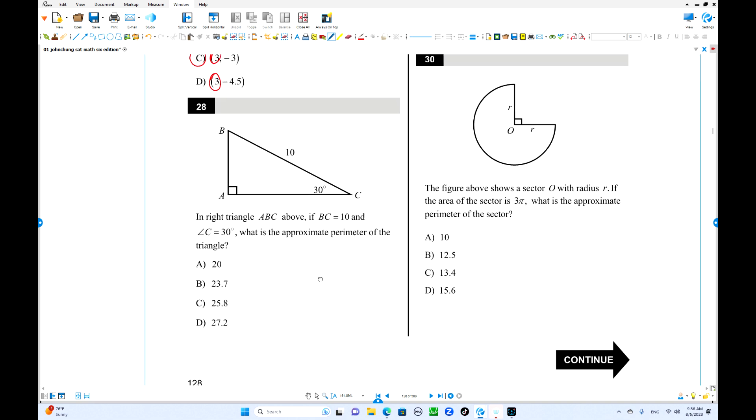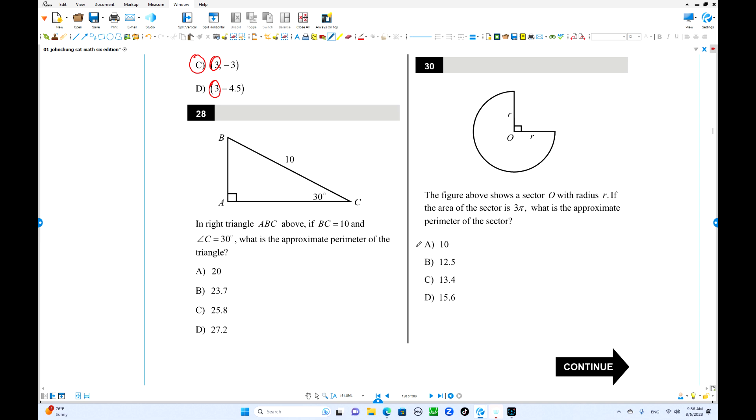Number 28. What is the approximate perimeter? This is a special right triangle. This is 60. This side must be half of this one, 5. The other side is 5 times square root of 3. So total is 15 plus 5 root 3. That is the perimeter. You can use your calculator. 15 plus this is 1.7 around 8, around 23.7. That's the best answer.